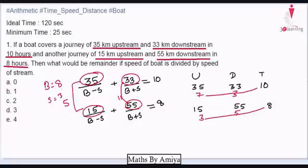And we have to find the remainder. When 8 is divided by 3, the answer would be c. So, my suggestion is: if you have upstream and downstream equations, first work on a common factor. If the equation is satisfied, then this is an easy question. If not, adjust the values or solve the equation. I hope it is clear. Thank you.